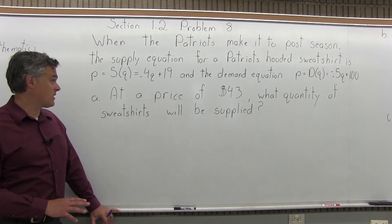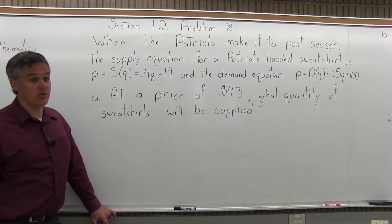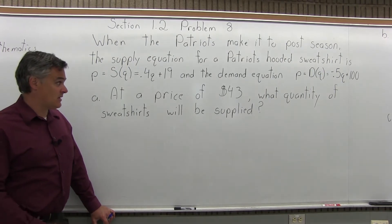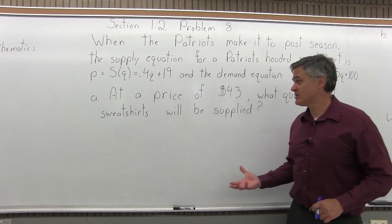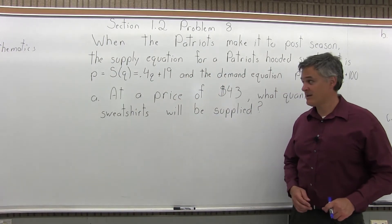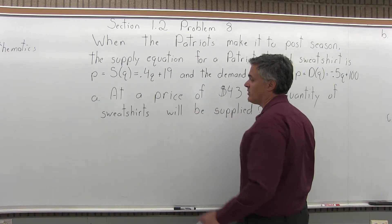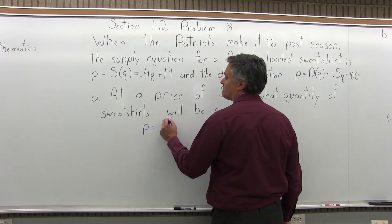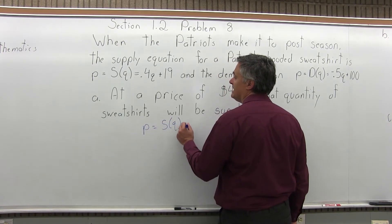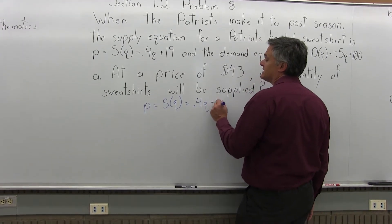Part A says: at a price of $43, what quantity of sweatshirts will be supplied? In other words, if they can sell for $43, how many will the sweatshirt company be willing to make? Because it asks about supply, I'm going to choose the supply equation, which is P equals S(Q) equals .4Q plus 19.